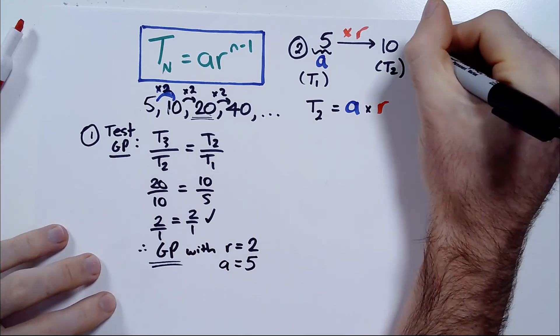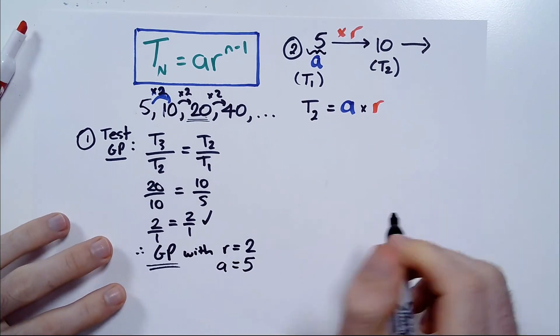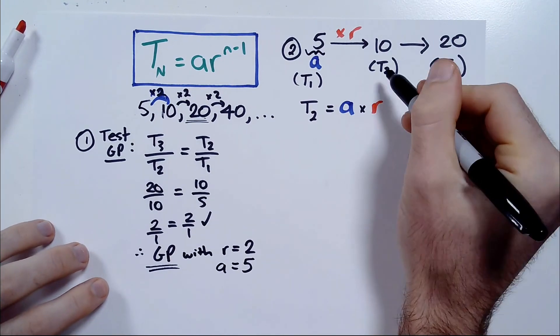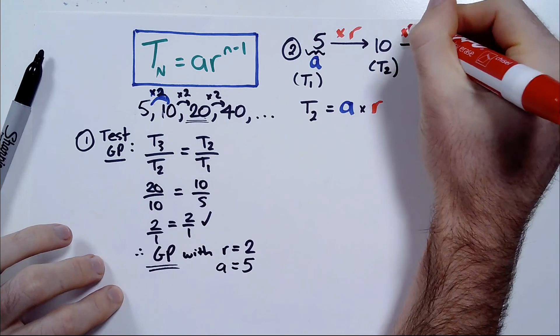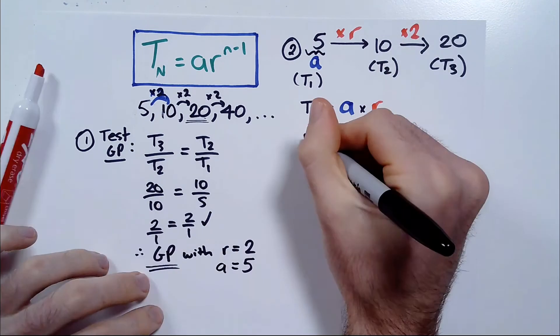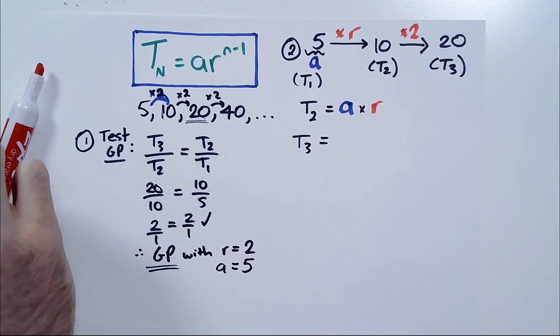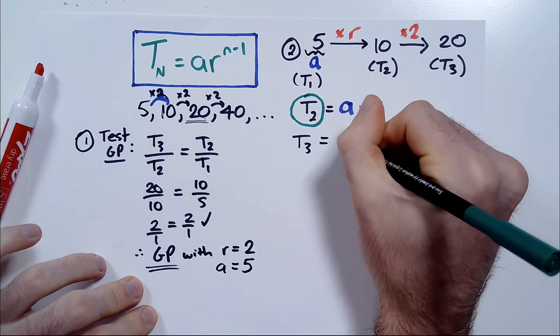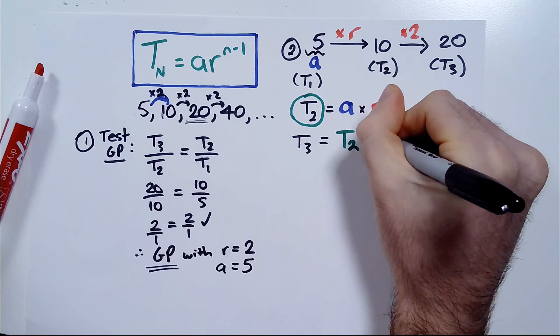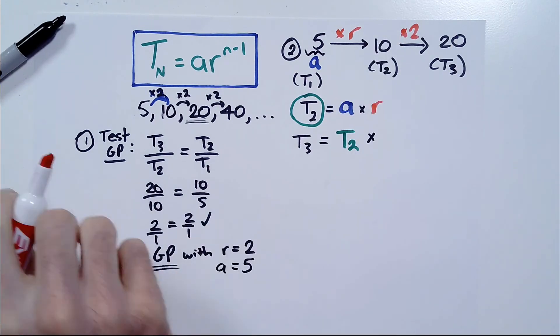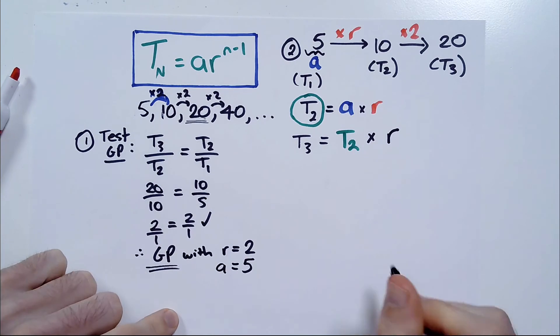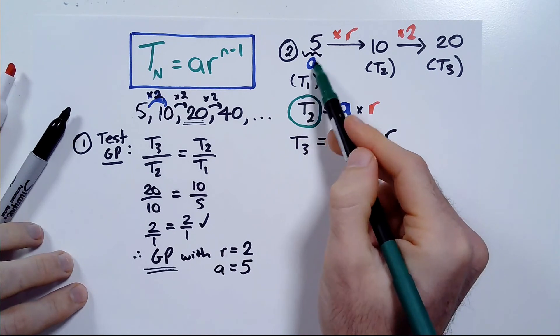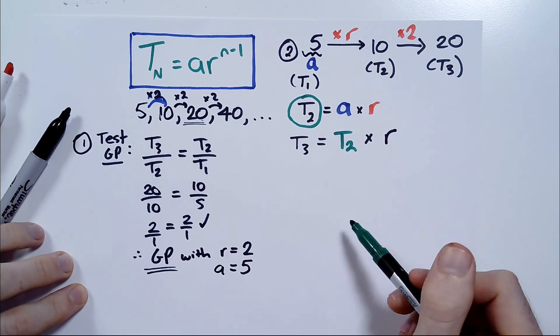What about to get to the third term, which we can see here is 20? The third term is 20. How do I get from there? Well, I multiply the second term by R. I multiply the second term by R. So, in other words, T3 is going to equal, and this is the important part. It's actually going to be T2 times R because it's going to be 10 times 2 to give 20. So, T2 times R will give you T3. So, do you see the pattern emerging? To get to the second term, you times the first term by R. To get to the third term, you times the second term by R, and so on.